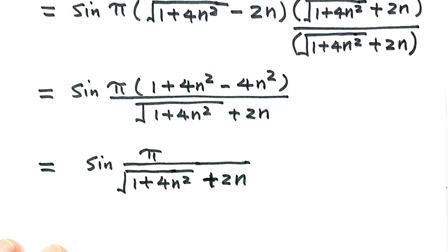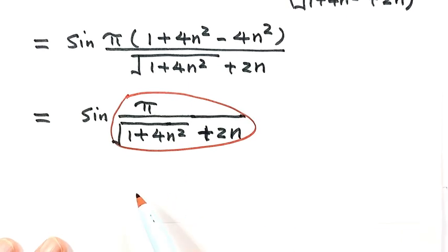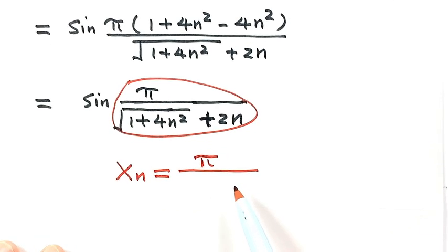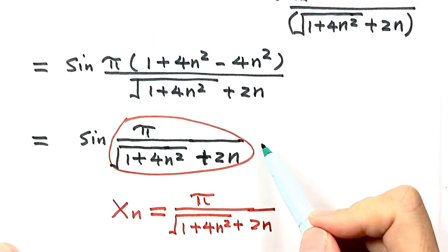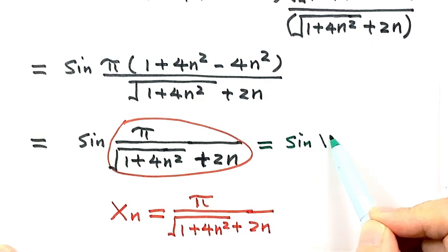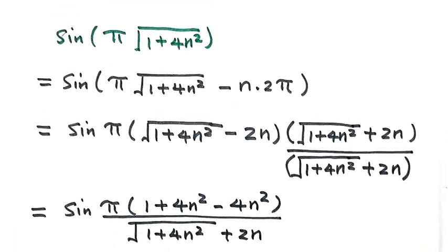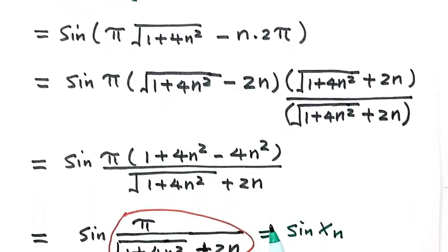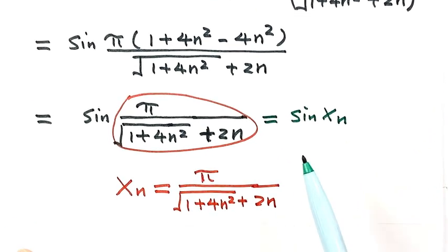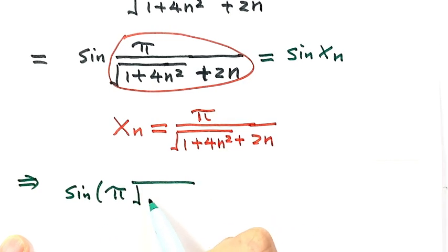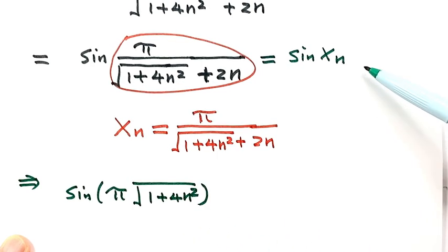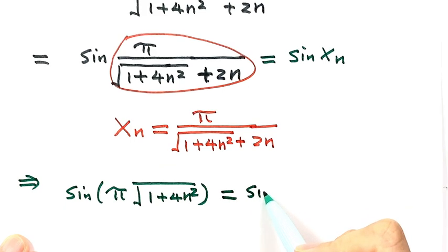Next, we can define this part as xₙ. So xₙ equals π over (√(1 + 4n²) + 2n). That means the sine expression can be written as sine of xₙ. So sine of π·√(1 + 4n²) equals sine of xₙ.